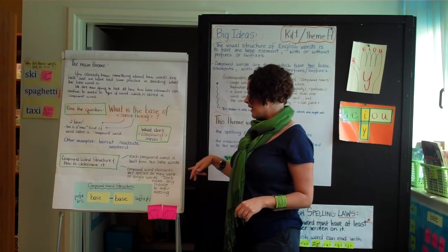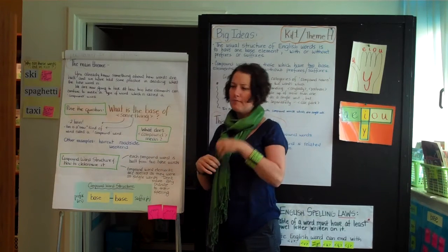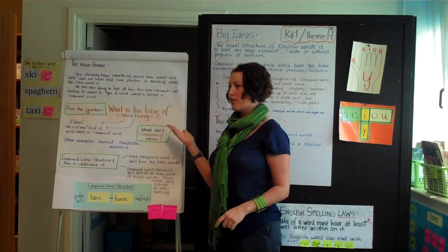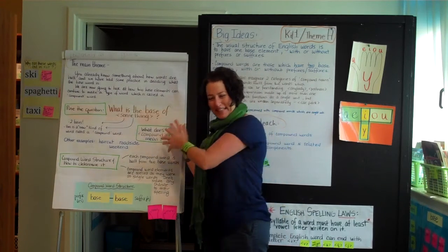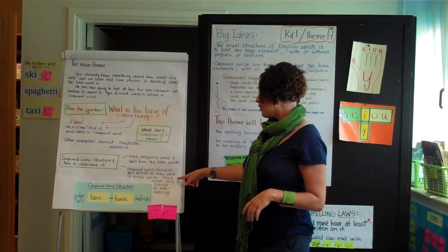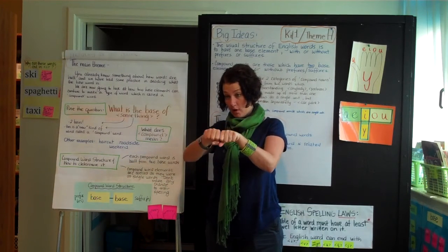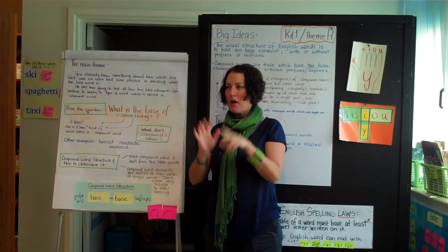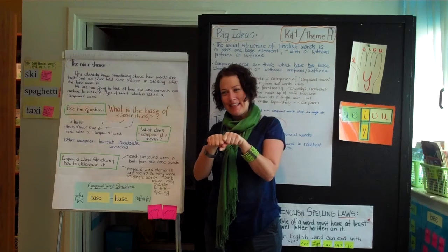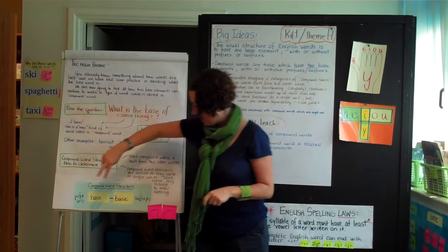Then we get into compound word structure — the idea that each compound word is built from two base words. Throughout the theme, Melvin uses 'base word,' 'base element,' and 'base' fairly interchangeably. Bases can sometimes not be words, but in compounds they are. Compound word elements are spelled as they were as single words — you don't make any changes to their spelling. So that's how you could have a Y in the middle or things like that for compounds. Compound word structure is two bases, and then you can add prefixes and suffixes.